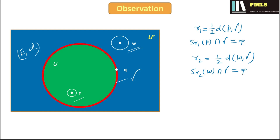But can we guarantee that sphere S(R₁, P) is contained in the set U, and that the open sphere S(R₂, W) is contained in the complement U^c of the set U? Possibly not. But we impose these conditions in the definition. Before that, a quick look at any open sphere around Q: any open sphere around Q is going to intersect with U as well as the complement U^c of the set U. Now we proceed to the definition part.